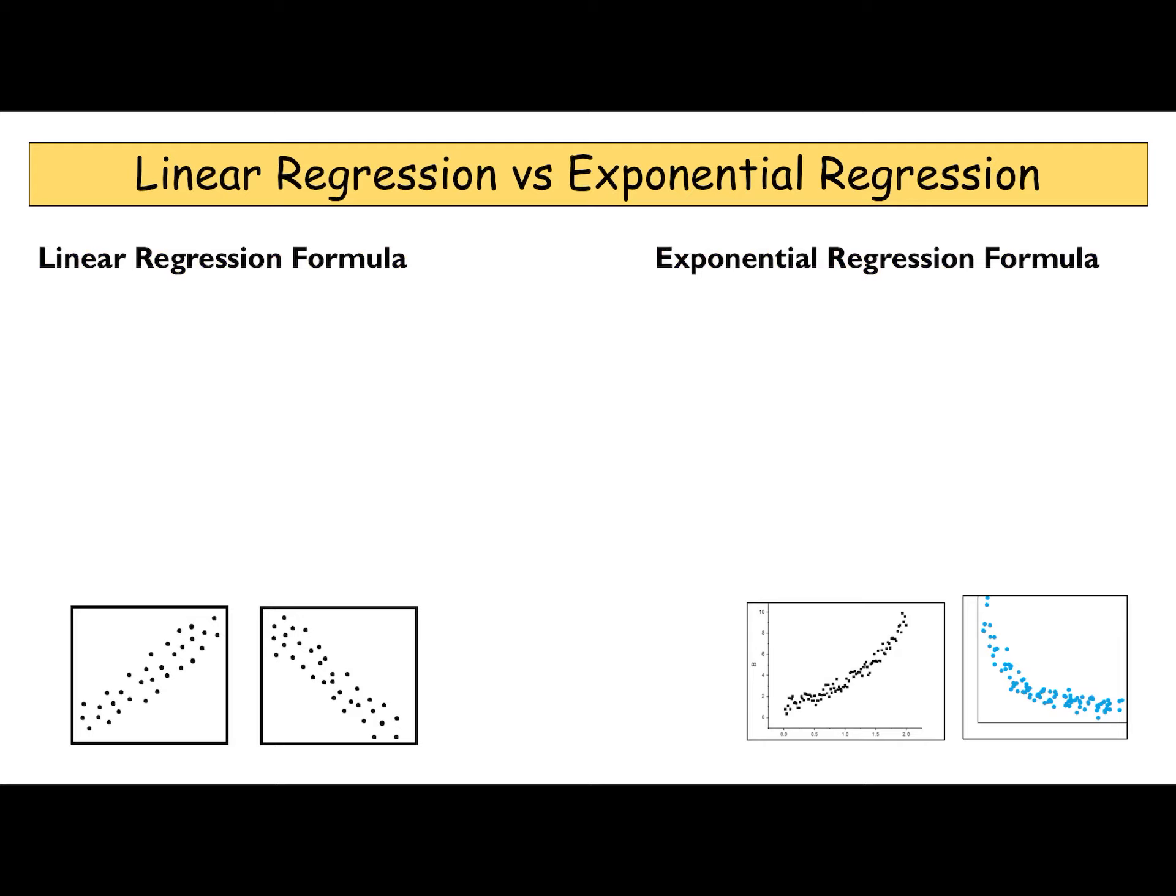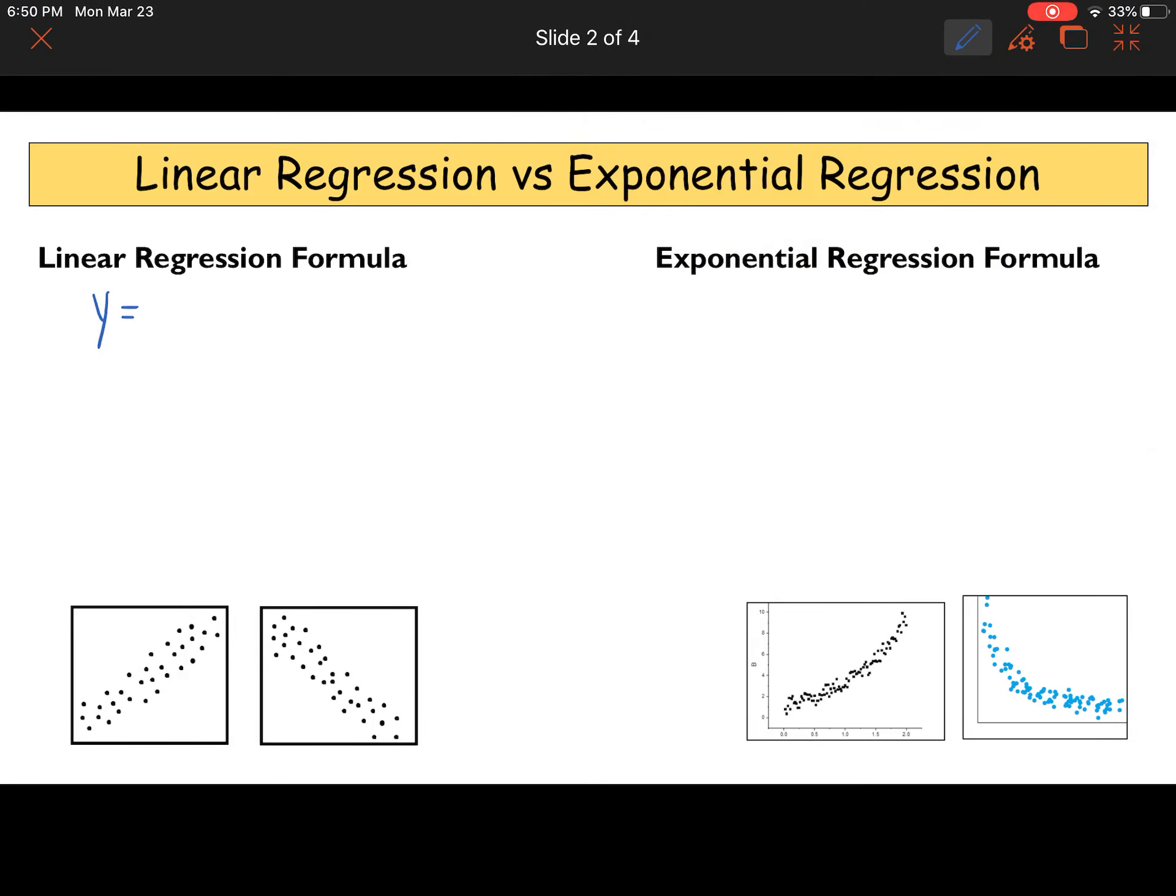So first to start, linear regression versus exponential regression. We're going to look at the difference between both of them. So in linear regression, the equation of our line is Y equals MX plus B. Remember our M stands for our slope and our B represents our Y-intercept, where it crosses the Y-axis. Our GeoGebra command is FIT LINE. That's what you type into GeoGebra when you want to do a linear regression.